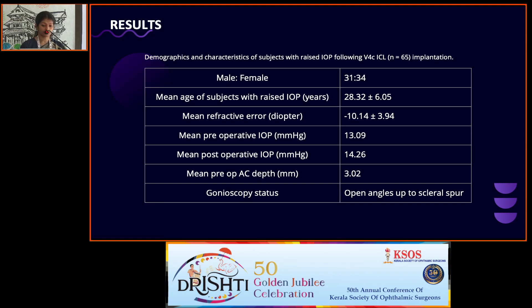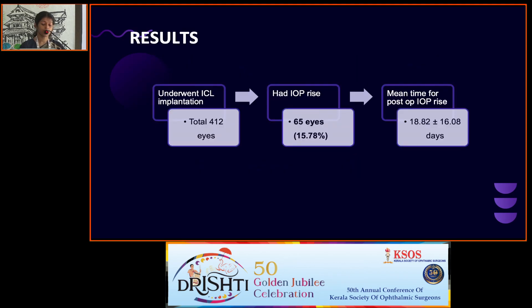Demographics showed a male-to-female ratio of 31:34. Mean age of subjects with raised IOP was 28.32 years. Mean refractive error was -10.14 diopters. Mean preoperative IOP was 13 mmHg and mean postoperative IOP was 14.26 mmHg. Gonioscopy showed open angles in all patients. Out of 412 total eyes, 65 eyes (15.78%) had IOP rise, with a mean time to postoperative IOP rise of 18.82 days.